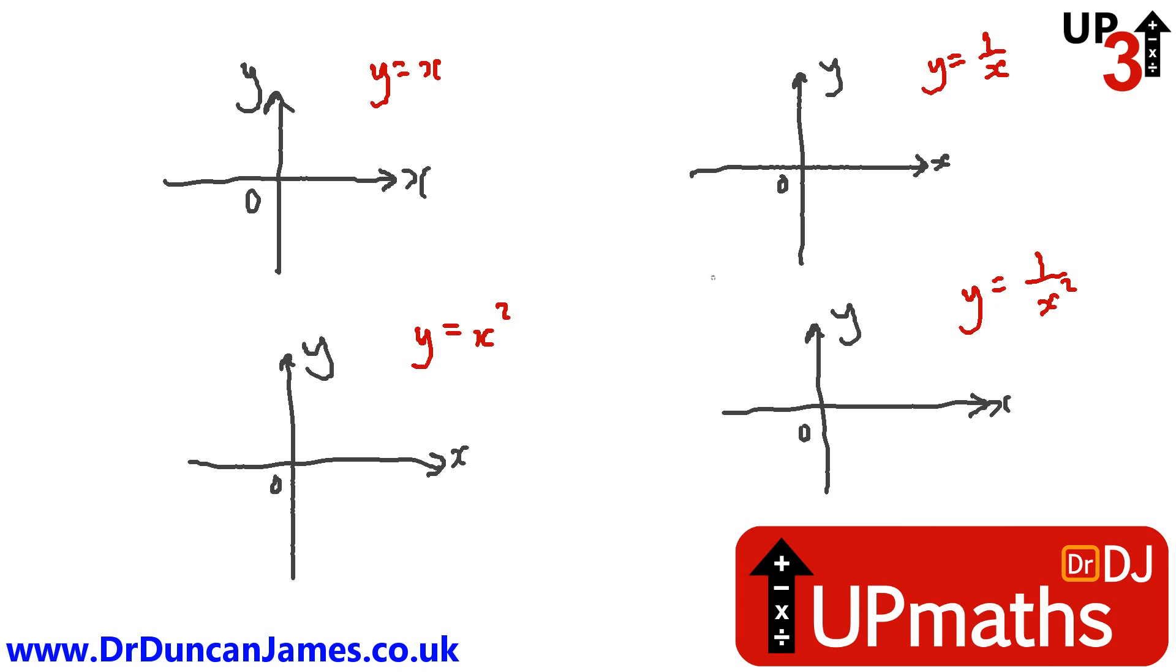Now, let's just redraw the graph y equals x, which looks like this, the graph y equals x squared, which looks like this, the graph y equals 1 over x, which looks like this, and the graph y equals 1 over x squared, which looks like this.